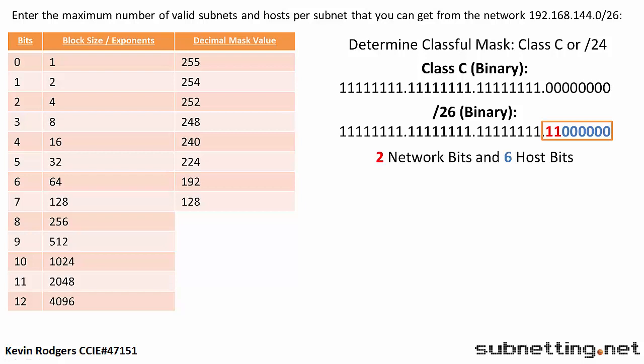We'll do the subnets first. Simply count the new network bits and find that number in the bits column. Parallel to that is the number of subnets. There are four valid subnets.